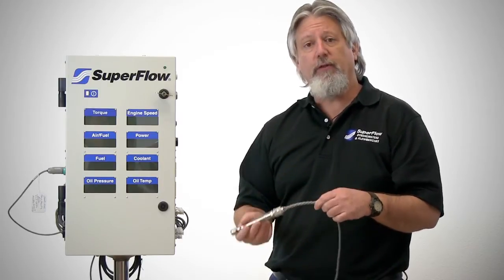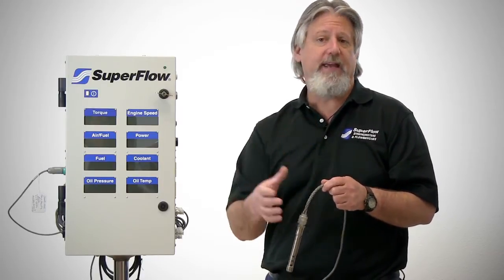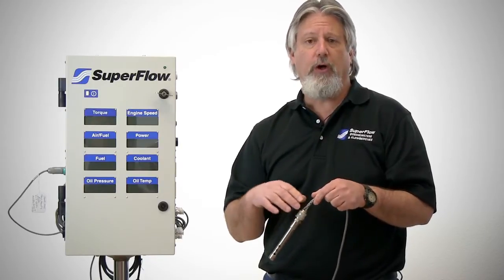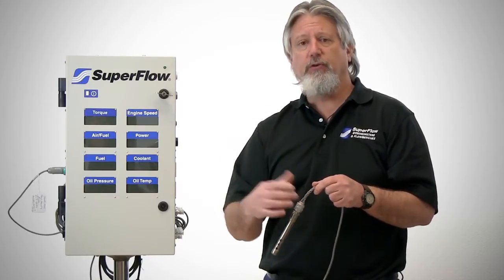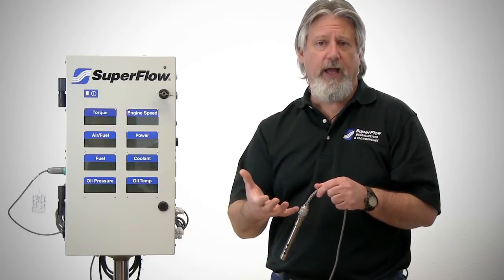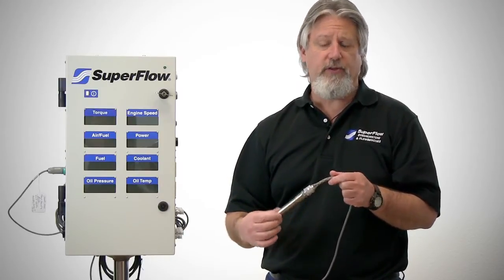And then, as we saw in the formulas that we were looking at, we're going to take that humidity value and turn it into a water vapor pressure number, which is going to be used in the SAE J1349 or J607 correction formulas.